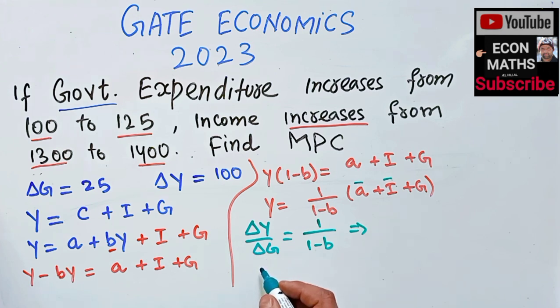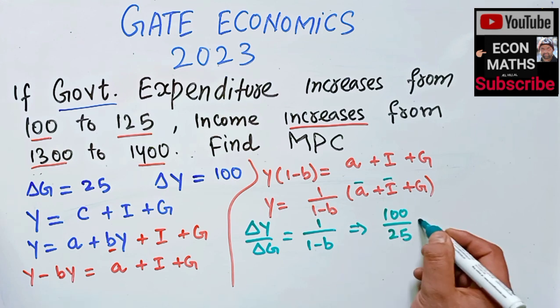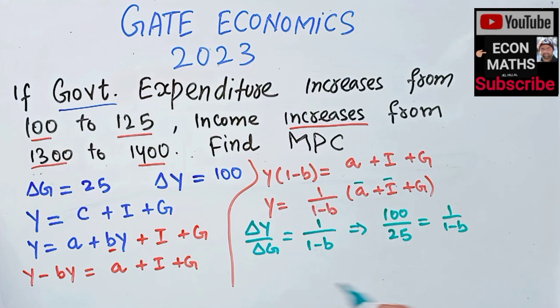Del Y upon del G can be written as: del Y is given as 100, so 100 over 25 (the change in government expenditure) equals 1 over (1 minus B). This simplifies to 4 equals 1 over (1 minus B).